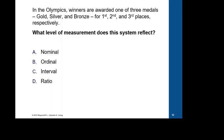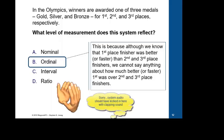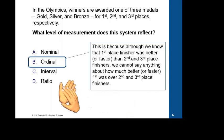We know that in the Olympics, winners are awarded one of three medals: gold, silver, and bronze. The question was, what level of measurement does this system reflect? If you guessed ordinal, give yourself a pat on the back. This is because, although we know that first place finisher was better than second or third, we cannot say anything about how much better or faster the gold medalist or gold medal winner was over the silver or bronze medalist.